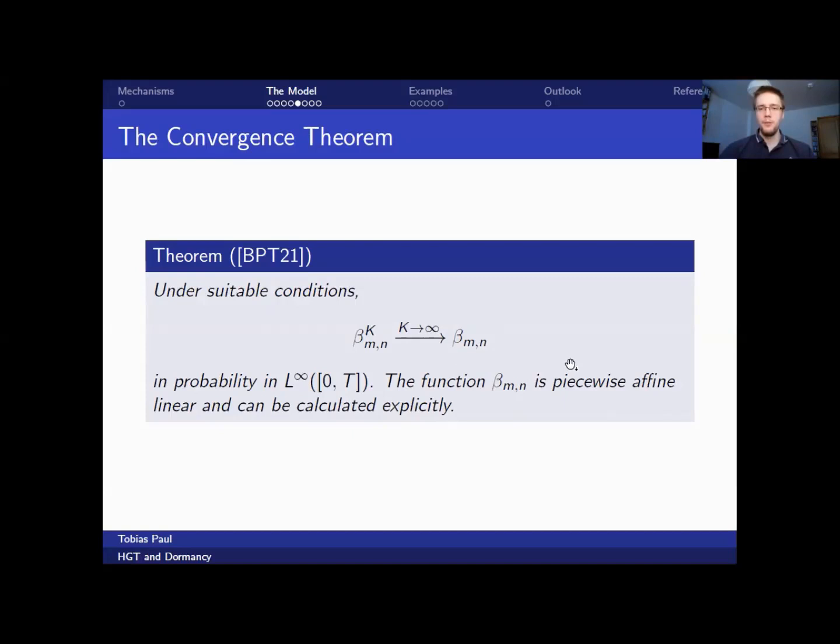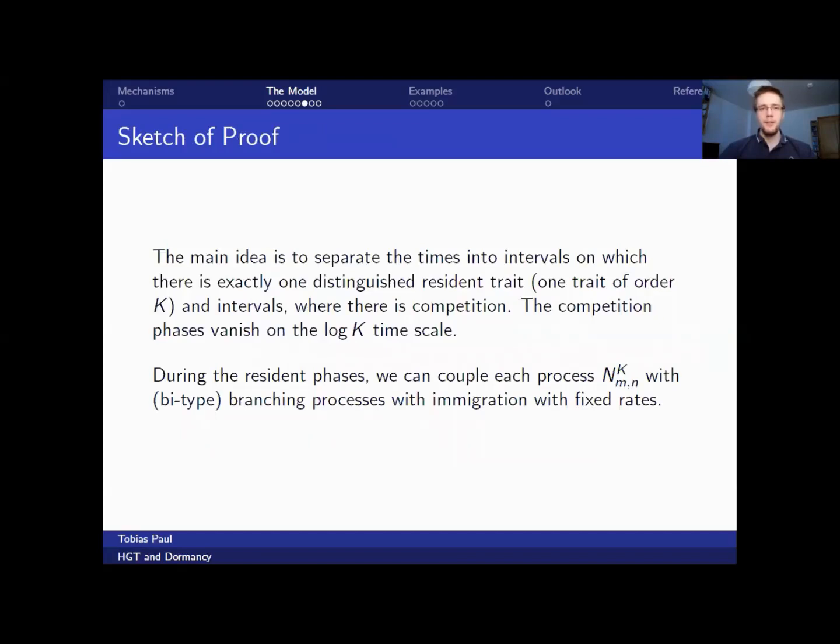However, under suitable conditions is a bit vague. We need to take care of a number of technical conditions, which I do not want to go into too much detail here. However, I do want to convince you that this result may hold. And the idea to proving this result is to separate the times on our timescale into intervals on which there is exactly one distinguished resident trait, which is of order K, and intervals in which there is competition between two traits which are simultaneously of order K. The competition phases then vanish on the log K timescale, which is not too easy to show and just needs to be believed.